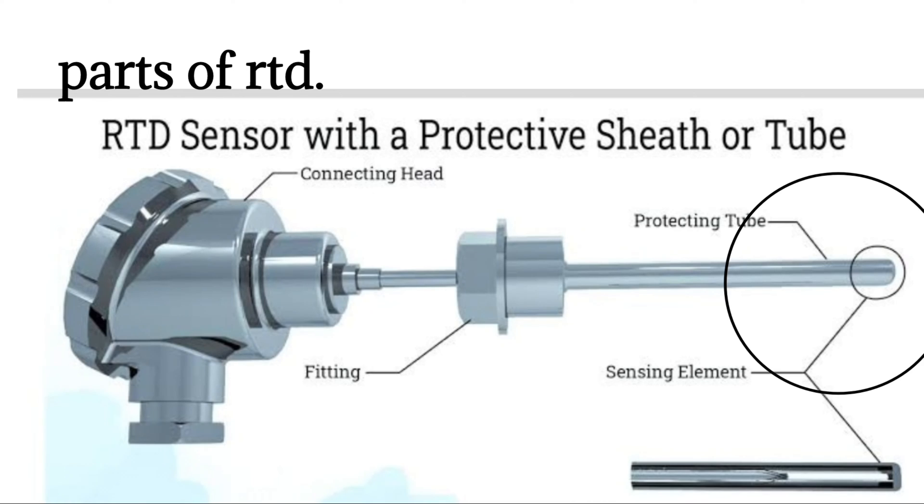Sensing elements which are constructed of metals like platinum, nickel, copper or tungsten respond to the process temperature by generating a measurable resistance.